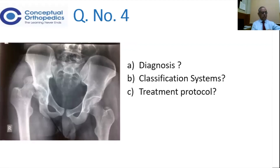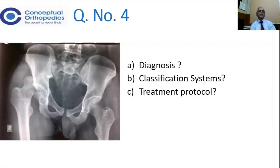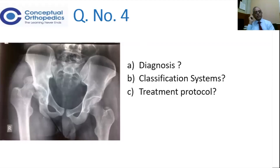Now we go to question number 4. What is your diagnosis here? We have described anterior and posterior dislocation, and classified posterior dislocation. What you see here is very typical — whether it is anterior or posterior, you cannot miss this particular fracture. That is a classical fracture of the head of the femur associated with the posterior dislocation.